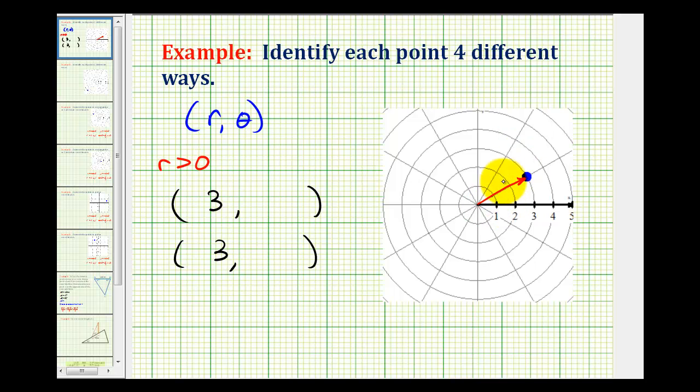So if we want theta to be positive, we can let theta equal thirty degrees or pi over six radians. Or we could also have multiple revolutions around the circle. So any other positive angle would be thirty degrees plus multiples of three hundred sixty degrees.